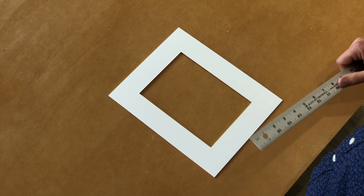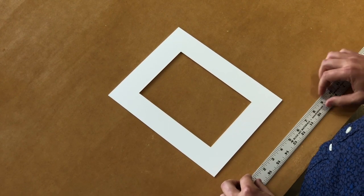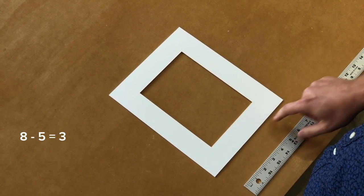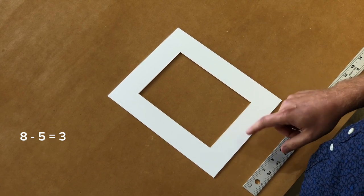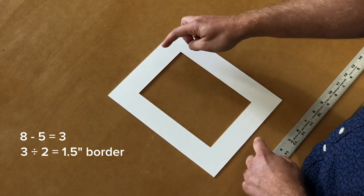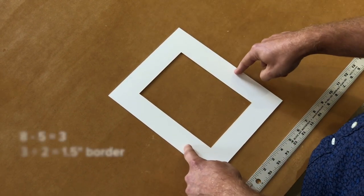So your formula for matting math is you will take just one dimension. Let's take the short side. So you'll take the 8 minus 5 equals 3, and then you divide that by 2, and that's how much the border width is on the opposite sides of the short side.